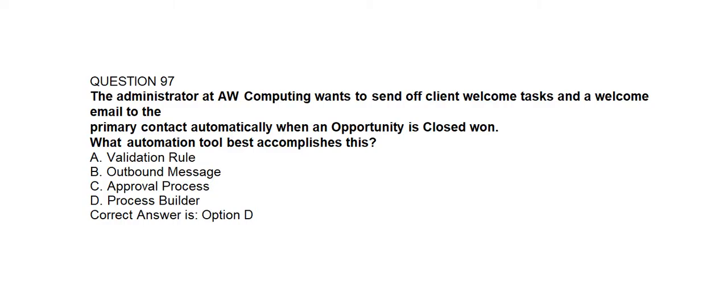Question number ninety-seven. The administrator at AW Computing wants to send a welcome task and a welcome email to the primary contact automatically when an opportunity is closed won. What automation tool best accomplishes this? Option A: Validation Rule. Option B: Outbound Message. Option C: Approval Process. Option D: Process Builder. Correct answer is Option D: Process Builder.